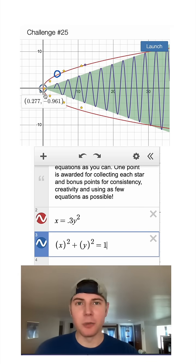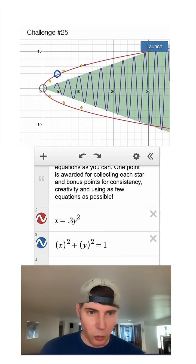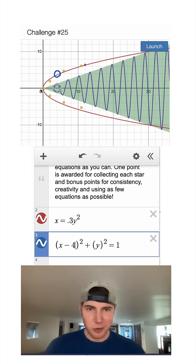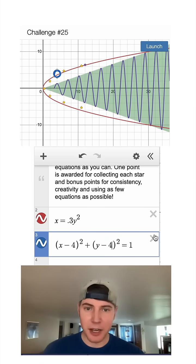In this case, our radius is 1. I want to move this circle to the right, it looks like 4. So to do that, I'm going to go inside with the x and hit minus 4. I also want to move it up 4. So inside with the y here, we're going to say minus 4. And now we're right on top of that.